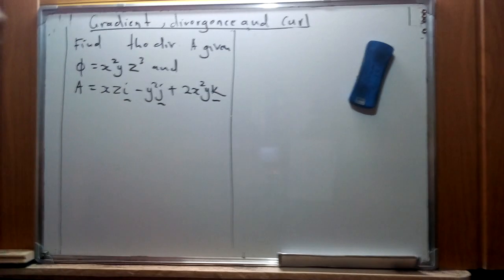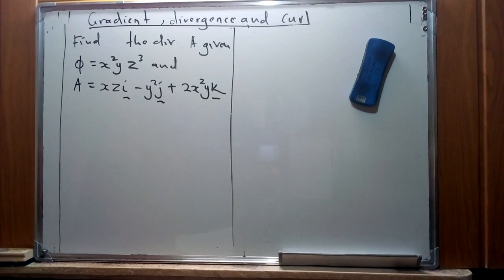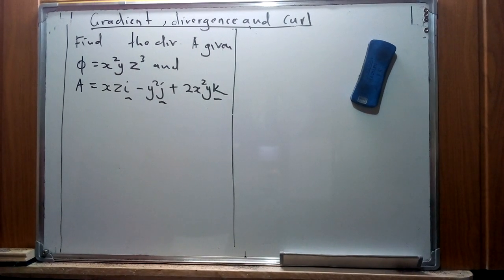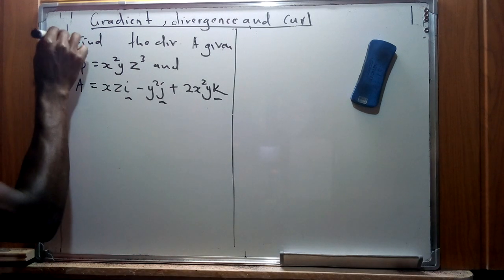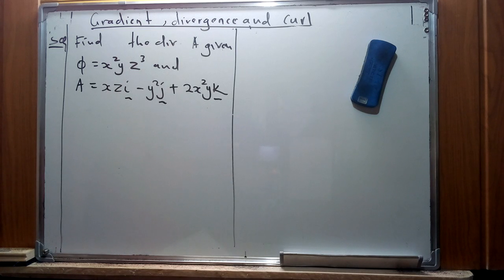In trying to figure out how we can describe a divergence, from our sample question we have been told: find the divergence given phi equals x squared y z cubed, and the vector A equals xz **i** minus y squared **j** plus 2x squared y.